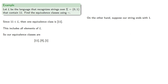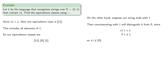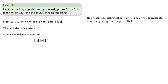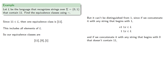On the other hand, suppose our string ends in 1. Then concatenating the string with 1 will distinguish it from the empty string, since string·1·1 is in L but empty·11 is not. So the string ending with 1 is not in the equivalence class of the empty string. But it can't be distinguished from 1: if we concatenate it with any string beginning with 1, string·1·1z is in L but so is 1·1z. And if we concatenate it with any string beginning with 0 that doesn't contain 11, string·1·0z is not in L and 1·0z is not in L. So any string ending in 1 is an element of the equivalence class of 1.